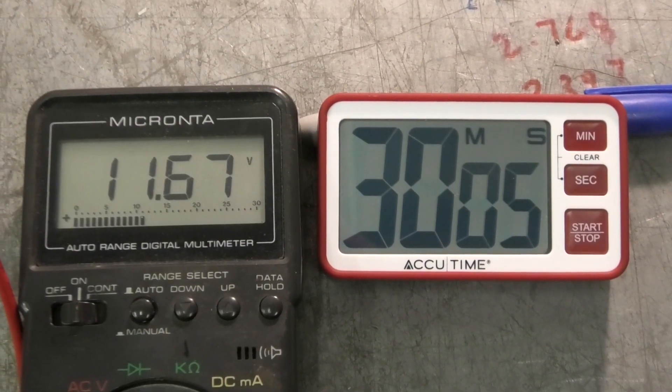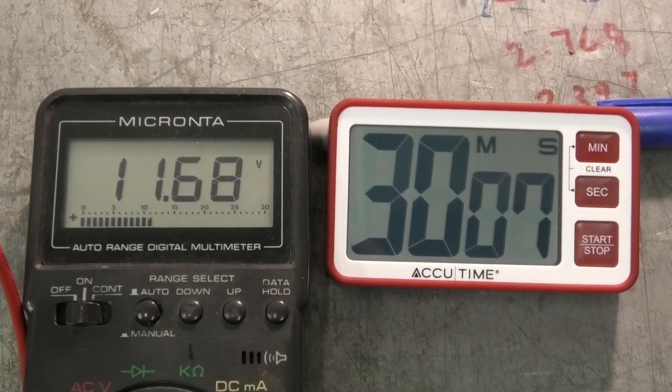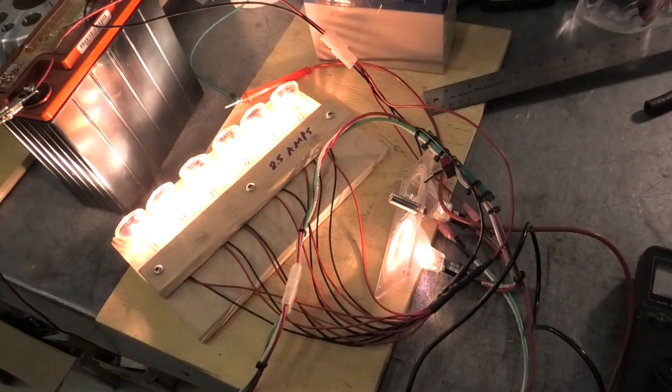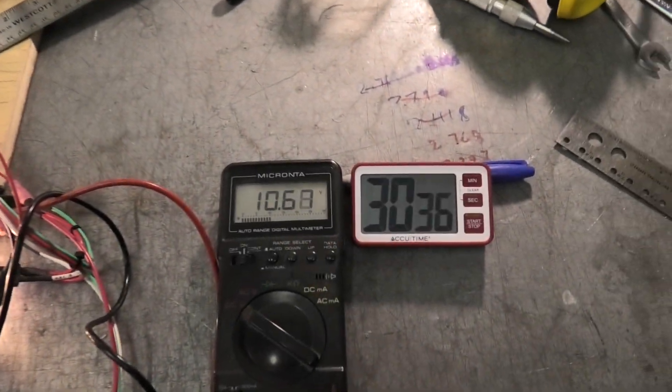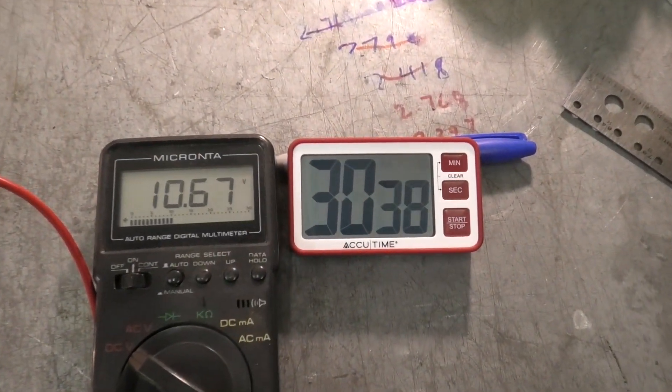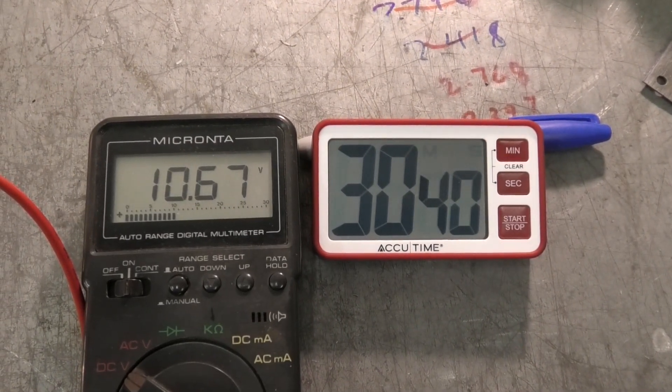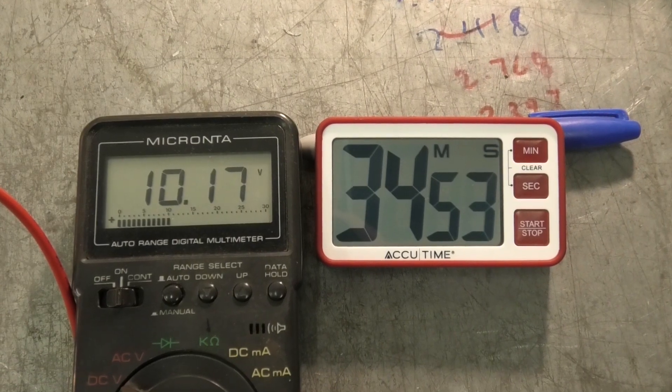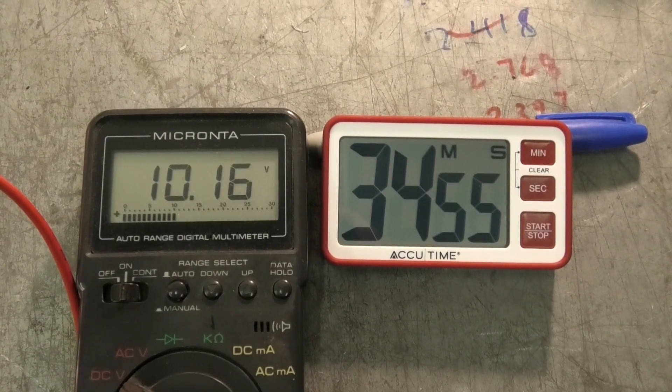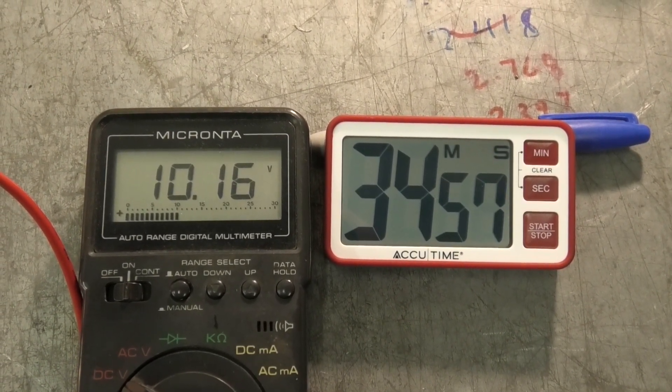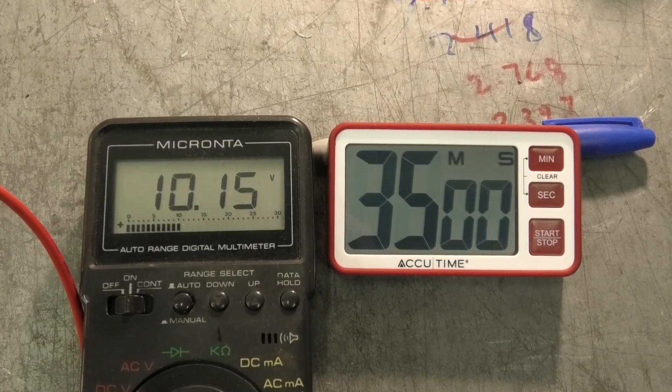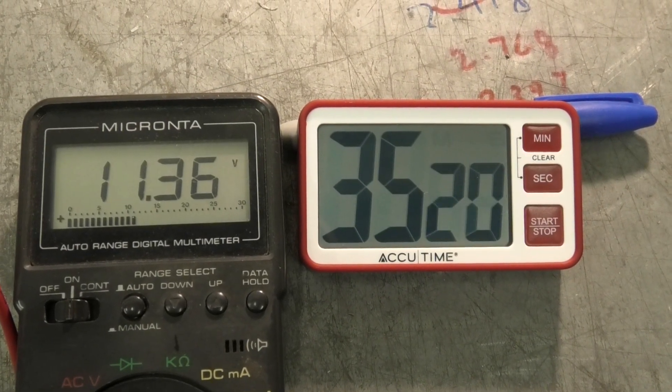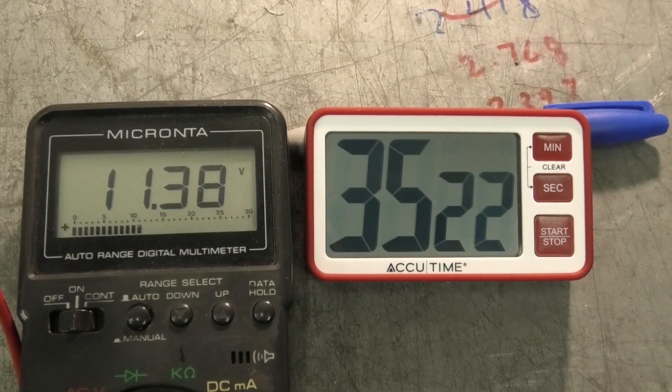We'll skip right to 30 minutes here, down to 11.68 volts. Loaded voltage we can see here at the 30 minute mark with the 11 amps on there, 10.67 volts. This is loaded voltage at the 35 minute mark, 10.17 volts. And finally unloaded voltage at the 35 minute mark, 11.38 volts.